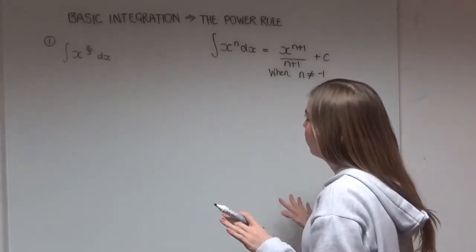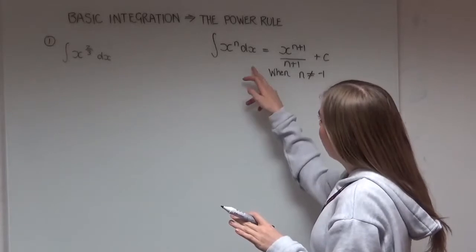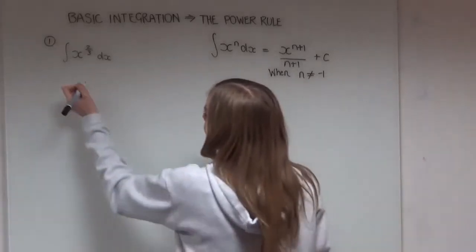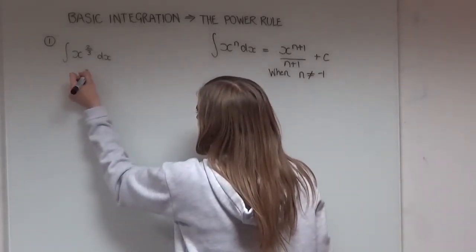We just do it exactly the same as normal, so we use the power rule that's here. So in this case our n is 2 over 3.